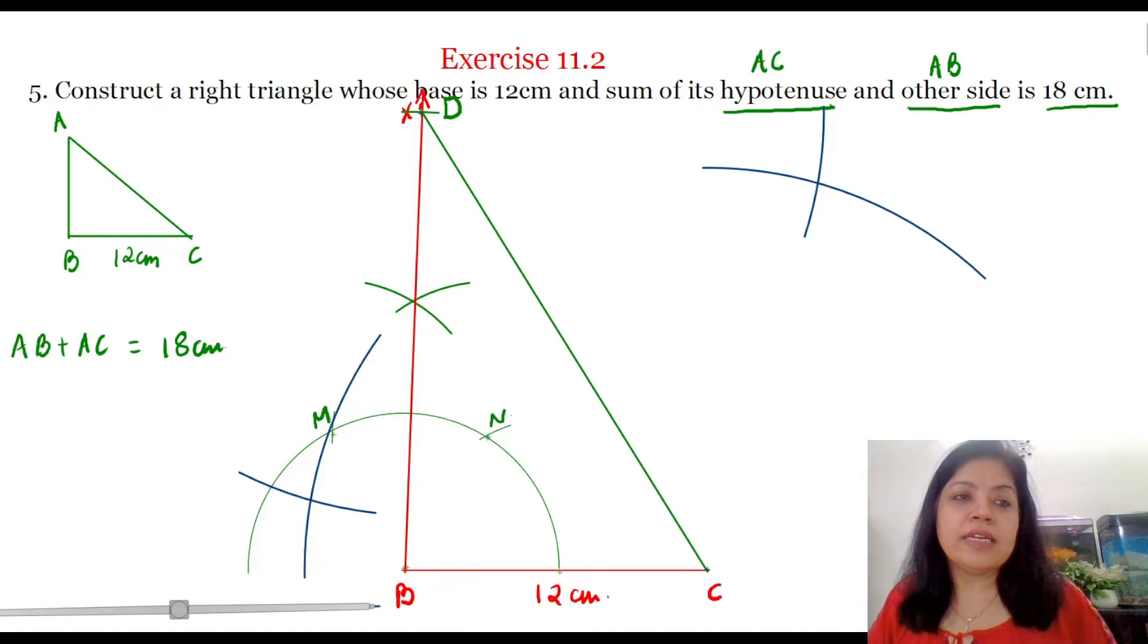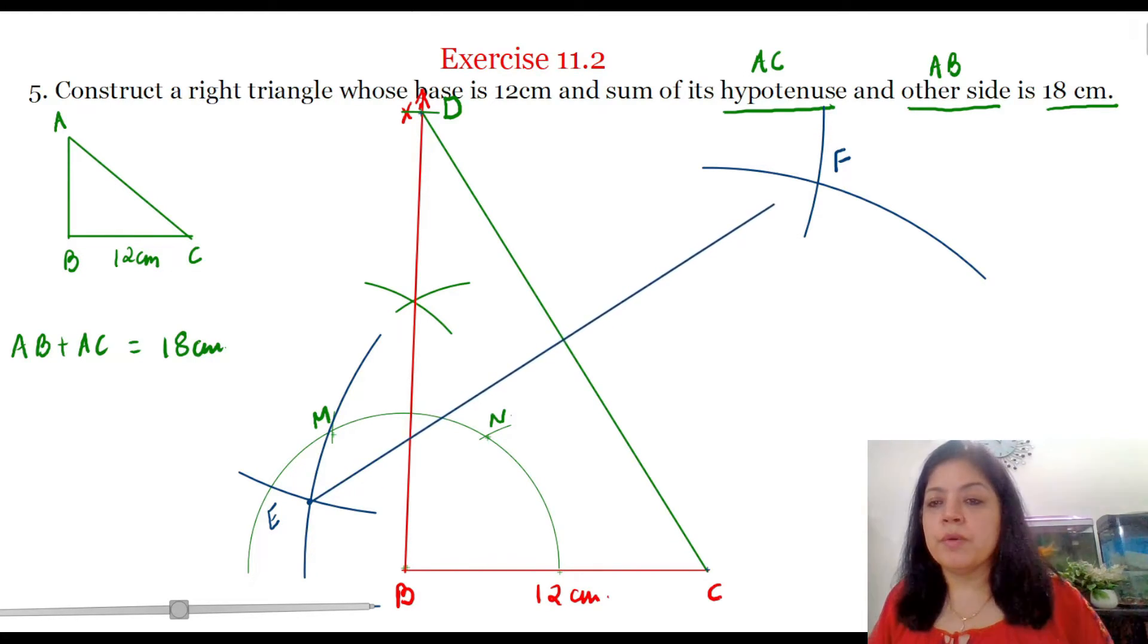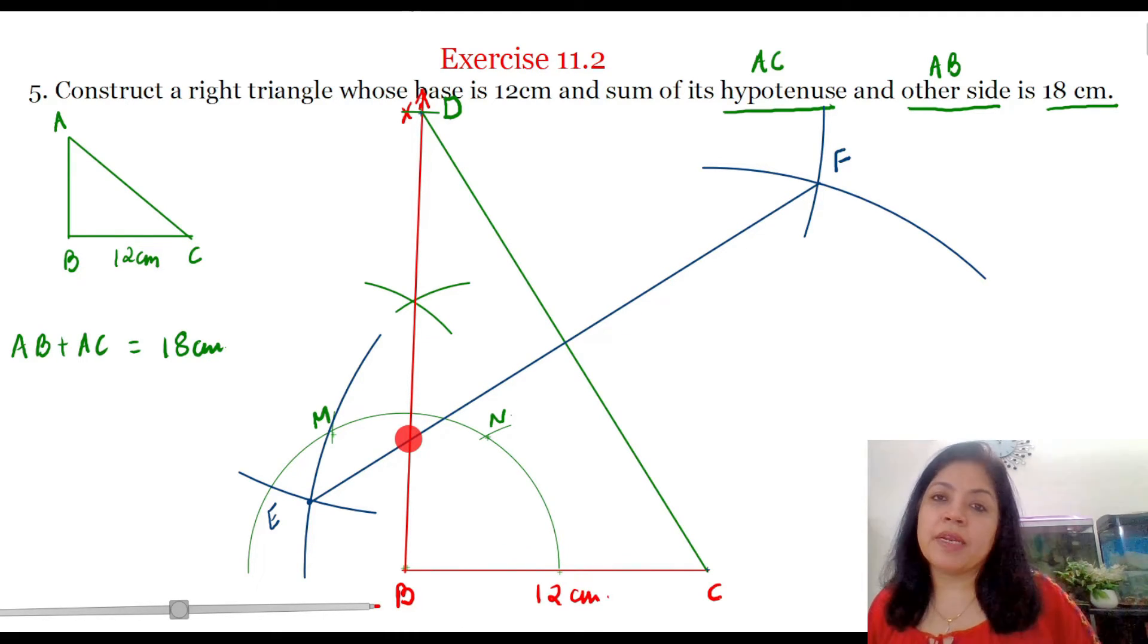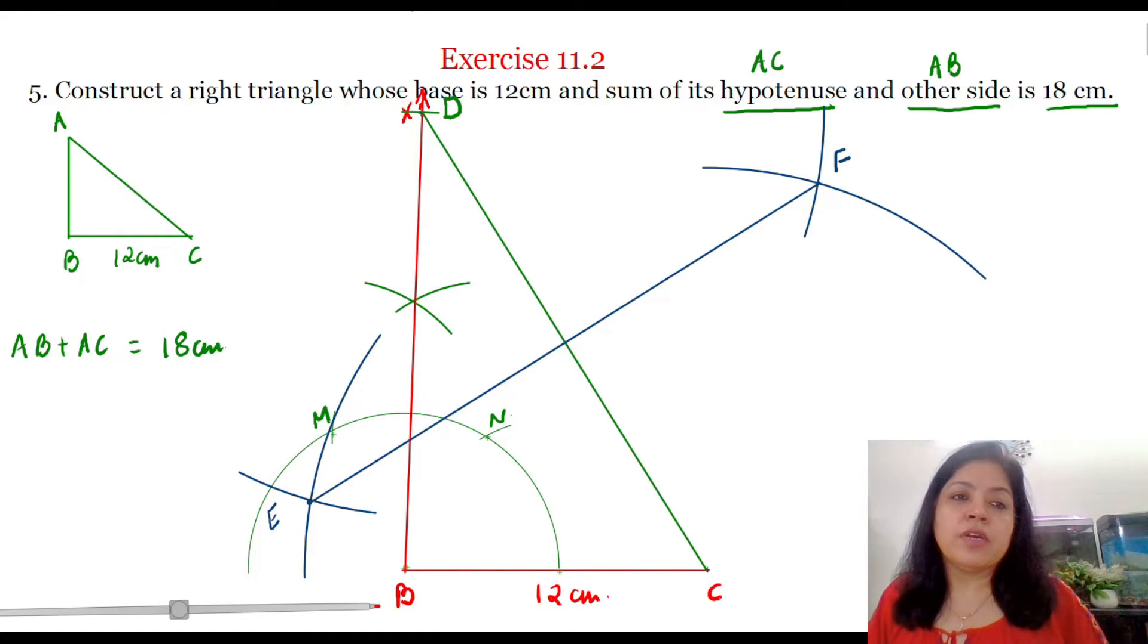Now let these two points of intersection be E and F. Join E and F to get the perpendicular bisector of CD. So the perpendicular bisector E and F intersects the ray BX at this point and so this point is the third vertex of the triangle ABC that is vertex A.